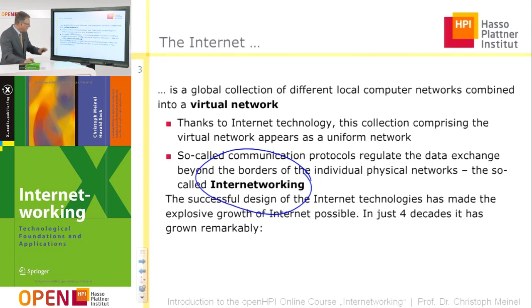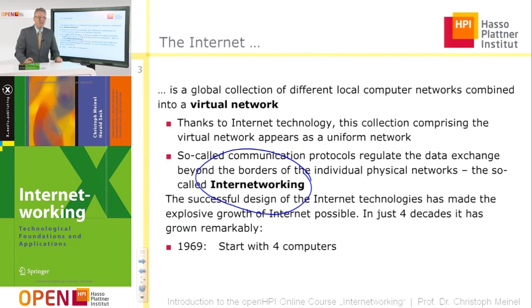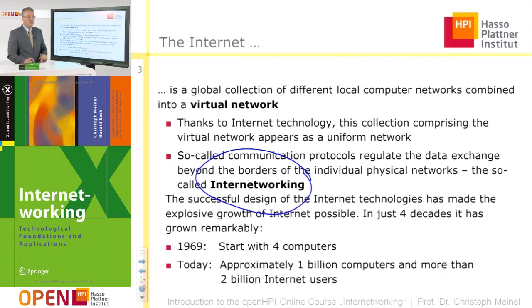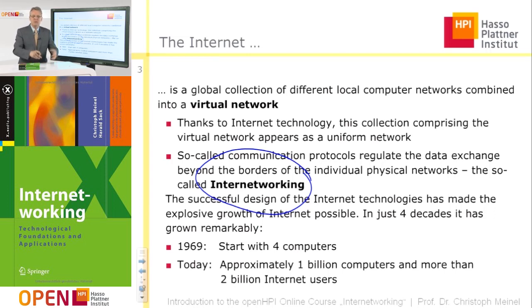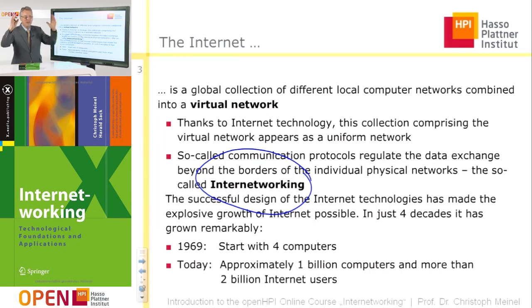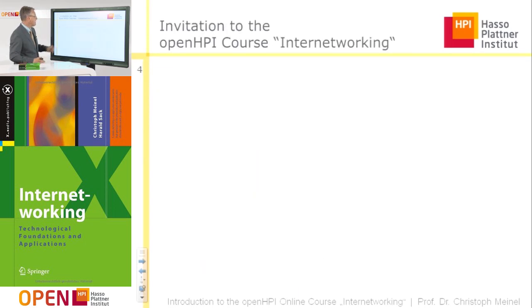If we look back, the internet started in 1969 with four computers. And today we have approximately one billion computers connected to the internet. Computers means also mobile devices, smart devices, laptops, computers, mainframes — and more than two billion internet users.